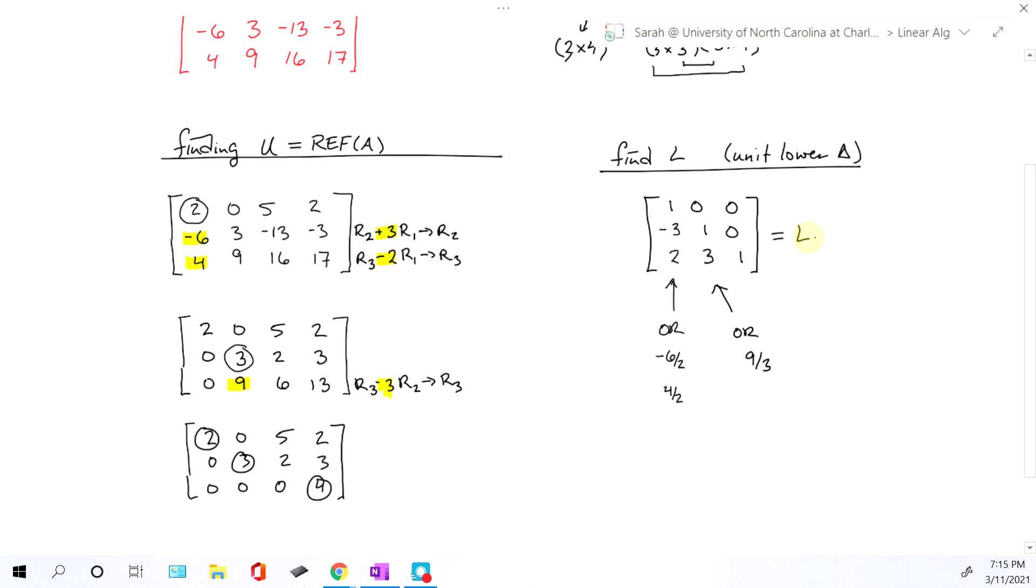This then, once it's filled in, is your L. This guy over here, once it's in echelon form, which it now is, is your U. And that's it.